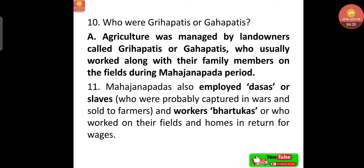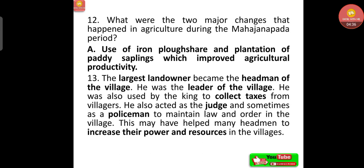Bhatrukas were those who worked on fields and homes in return for wages. The two major changes in agriculture during the Mahajanapada period were: the use of iron ploughshares, and the plantation of paddy saplings, which improved agricultural productivity.